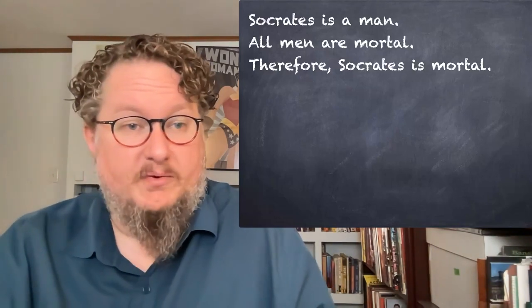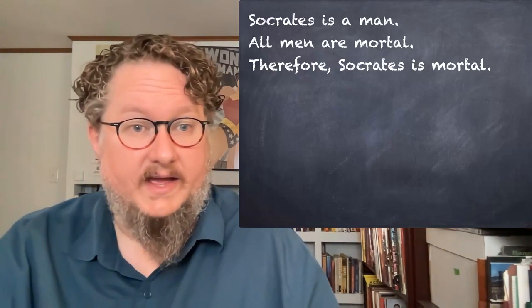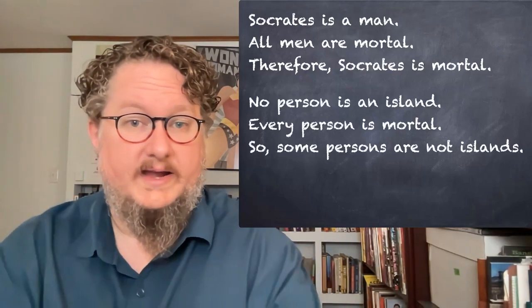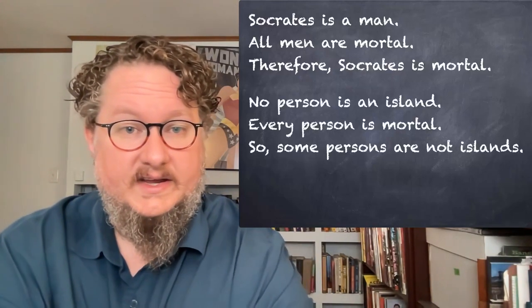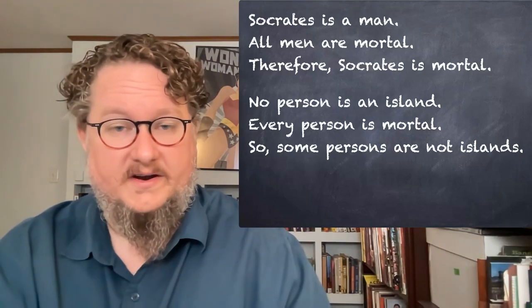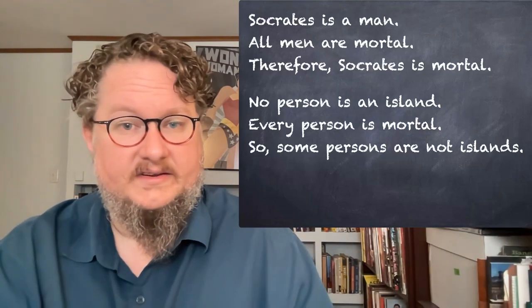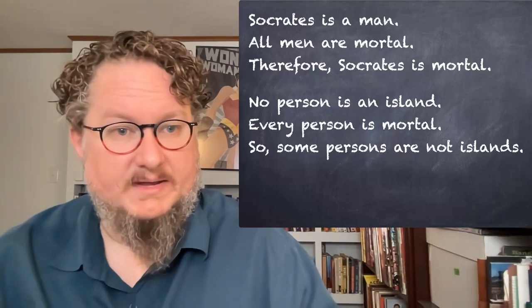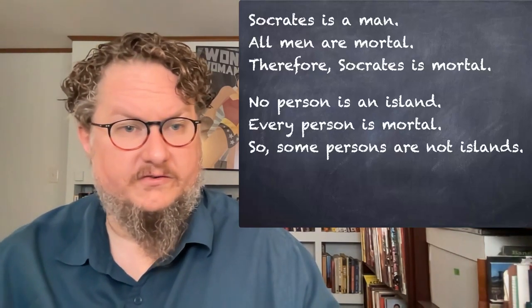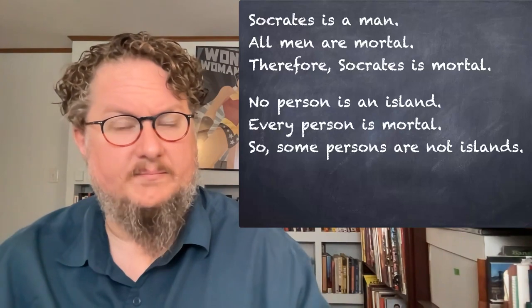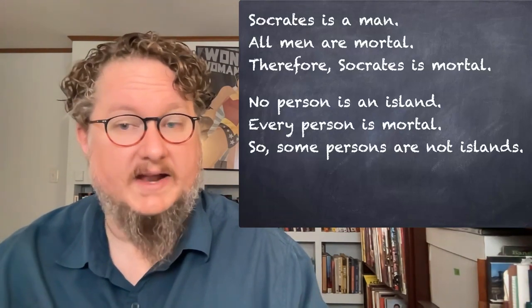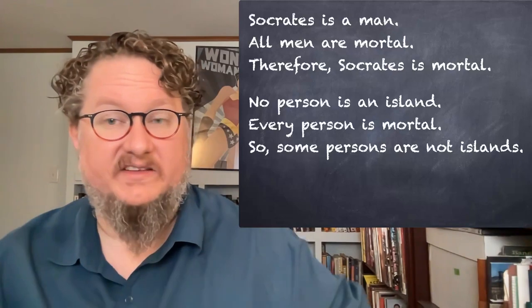So these would be represented as atomic sentences of SL. Here's another example with the same issue: No person is an island. Every person is mortal. So some persons are not islands. That may not be a great argument, but there are still structures — no, every, some — here that are not captured by SL.